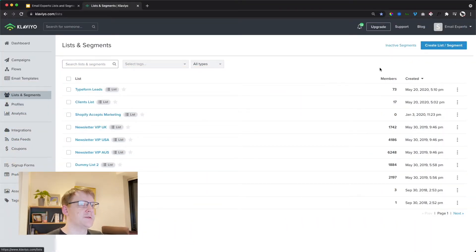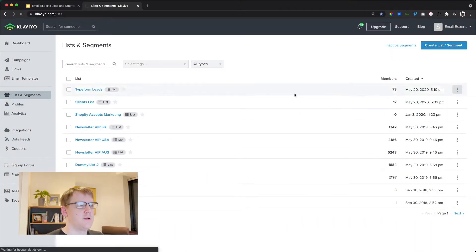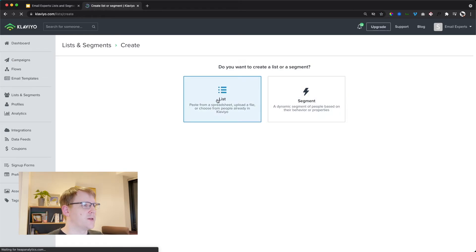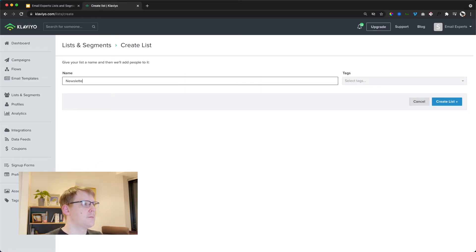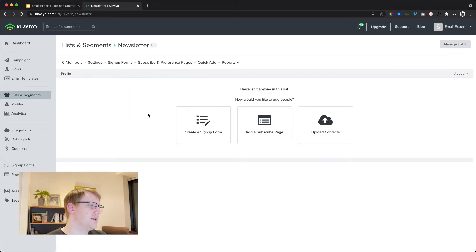So here's how you set up a list. Within Klaviyo, under lists and segments, click create list, click list, give it a name and that's it. Now your list is ready.